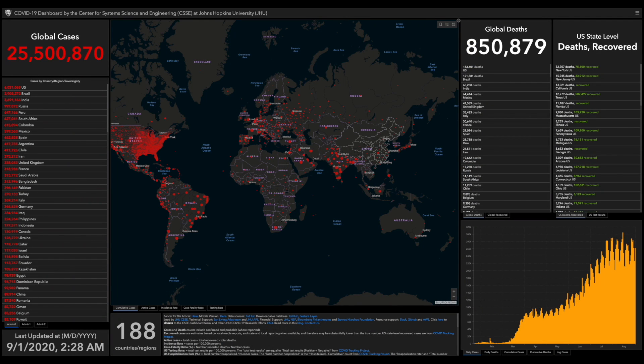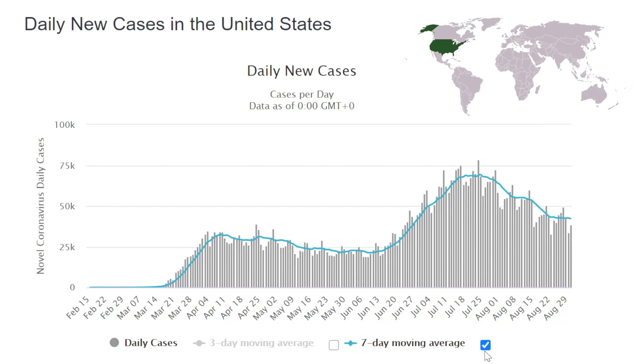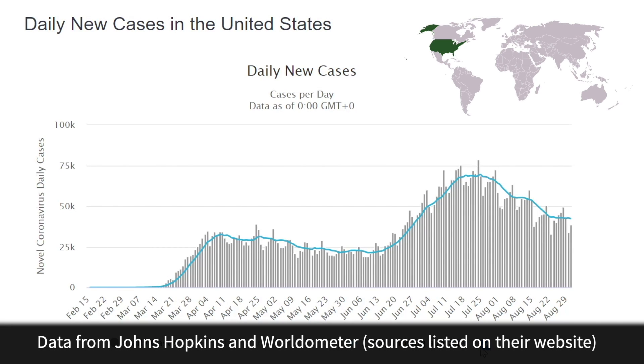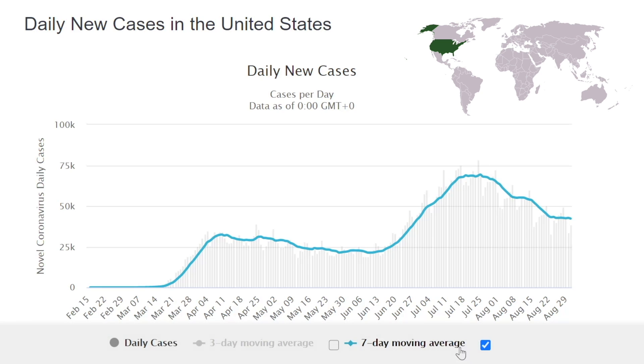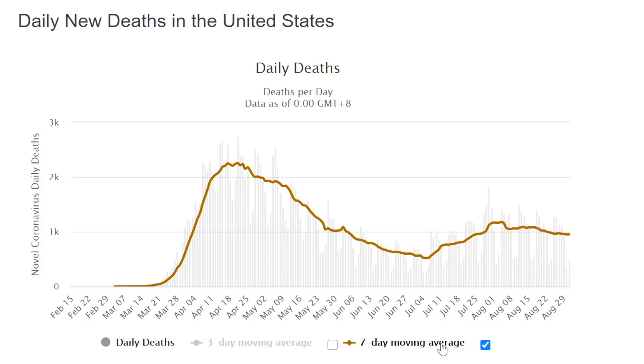Welcome to another MedCram COVID-19 update. Daily new cases in the United States seem to be slowly decreasing if we look at the seven-day moving average. Daily new deaths in the United States also seem to be slowly decreasing, especially if we look at the seven-day moving average, although it seems to have flattened and then decreased slightly.